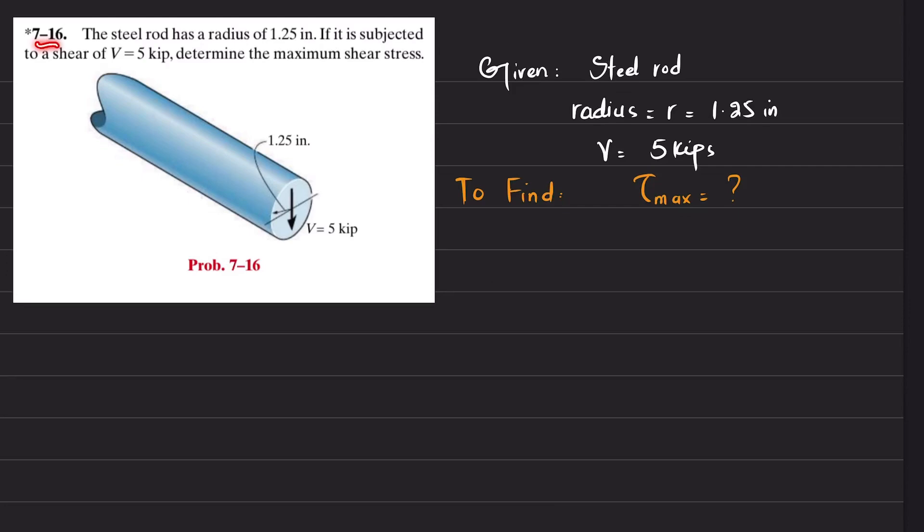Welcome back to problem 7-16. The steel rod has a radius of 1.25 inches. If it is subjected to a shear of 5 kips, determine the maximum shear stress. This is a steel rod having radius equal to 1.25 inches subjected to a vertical shear of 5 kips, so you have to find the maximum shear stress.